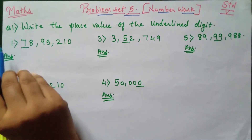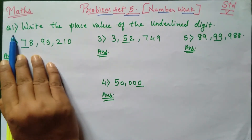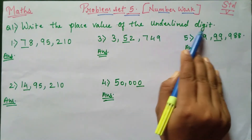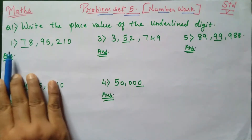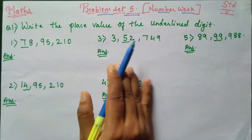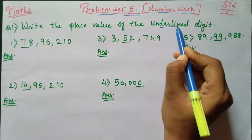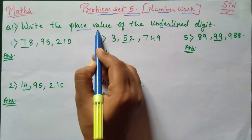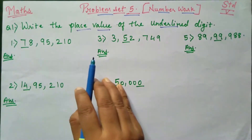Problem Set 5, Question Number 1: Write the place value of the underlined digit. Here it is said that there is one underlined number, and we have to write the place value of that particular number.